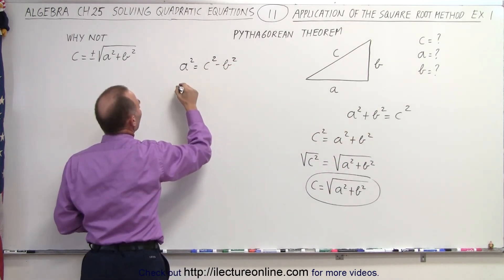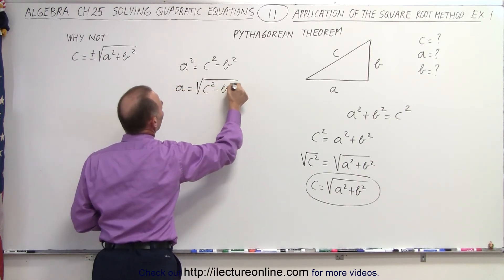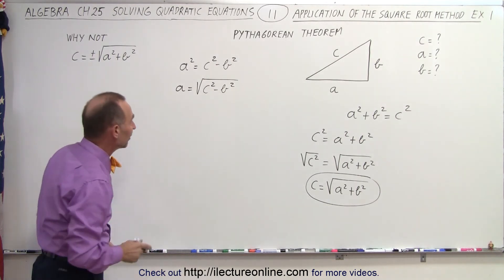Take the square root of both sides. We can say a is equal to the square root of c squared minus b squared. Again, we don't need a negative there because a cannot have a negative length.